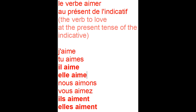J'aime, tu aimes, il/elle aime, nous aimons, vous aimez, ils/elles aiment. You see the liaison — when I say 'elles aiment' or 'ils aiment,' there is an S at the end because this is plural. 'Ils' is i-l-s, or for feminine plural it is 'elles,' e-l-l-e-s. The final S is going to be linked with the vowel A from 'aiment.'